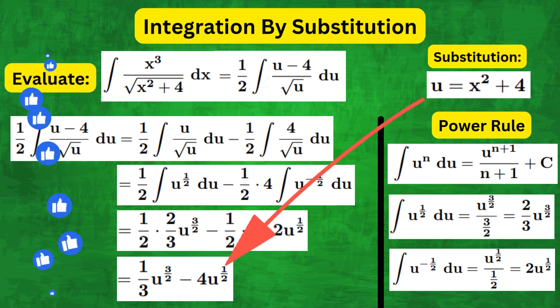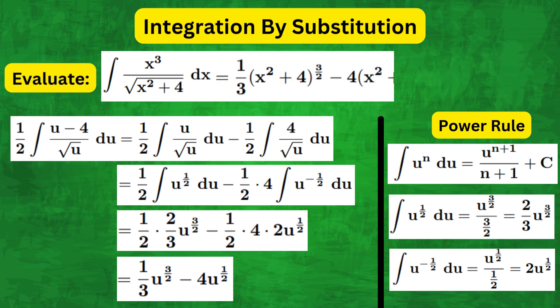Finally, we can substitute u equals to x squared plus 4 back in and we get everything in terms of x. So we have a third x squared plus 4 to the power of 3 over 2 minus 4 x squared plus 4 to the power of a half plus c, which is of course the answer.